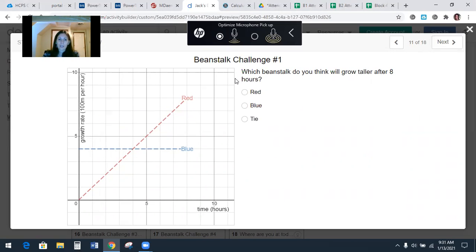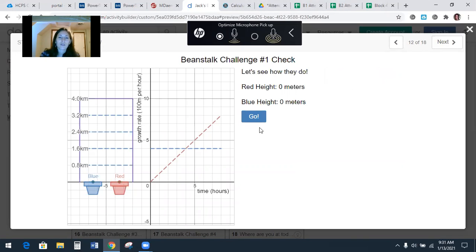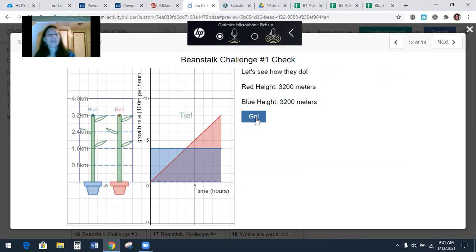So which beanstalk do you think is going to grow taller in eight hours, the red or the blue? Just everybody type red or blue, which one, or tie, I guess it could be a tie. Do you think red, red or blue? It's whichever one's going to give you more area under the curve. That's which one's going to grow taller. All right. So red, blue or tie. All right. Let's see what happens. And like, this is just for fun, just to see which one you think it's going to be. All right. Here we go. Oh, it's a tie. So, and I'm going to do it again. I want you to watch the blue one is growing at a constant rate and the red one starts out slow and then speeds up. So let me play it again. Just watch. So see how the blue one's constant. Red starts out slow and then speeds up and it's like a photo finish.